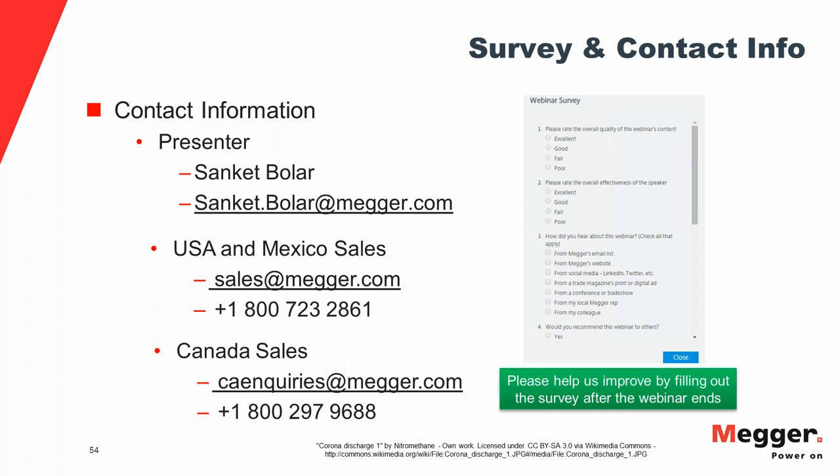Q: Ahmed asks — for TDD calculations, should I take the max current of my measuring interval or the rated current of my load? A (Andy): Per IEEE 519, TDD uses either a 15-minute or 30-minute demand interval. For each interval you measure an average current. The reference used for TDD calculation is the maximum average current recorded across the entire test interval.